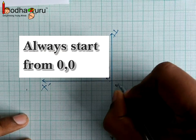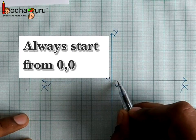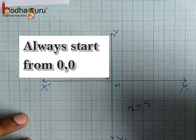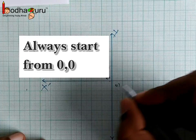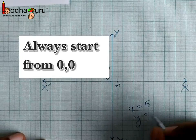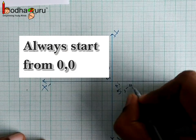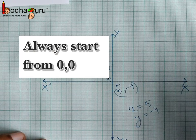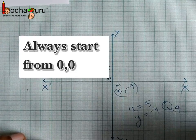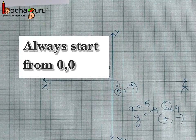Let us take another example. We need to find the coordinate of this point on the graph. We calculate its distance from the y-axis first — this point is 5 units from the y-axis and to the right of it, so x equals plus 5. This point is 4 units from the x-axis and below it, so y equals minus 4. So this point is (5, −4) and it lies in quadrant 4. That's all for now, bye bye.